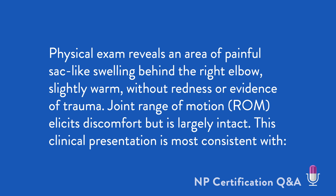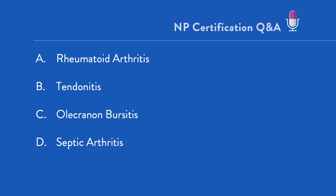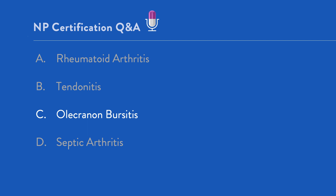This clinical presentation is most consistent with: A, rheumatoid arthritis; B, tendinitis; C, olecranon bursitis; D, septic arthritis. The correct answer is C, olecranon bursitis. First, determine what kind of question this is. Given that we're asked to choose from a variety of clinical conditions and to pick one, this is a diagnosis question.